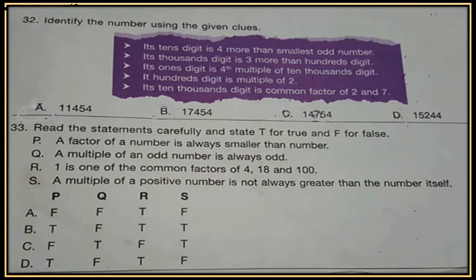Next question. Read the statements carefully and state T for true or F for false. P: a factor of a number is always smaller than the number. Q: a multiple of an odd number is always odd. R: 1 is one of the common factors of 4, 18 and 100. S: a multiple of a positive number is not always greater than the number itself. Read them carefully and state true or false.